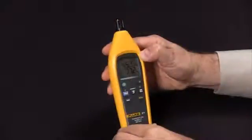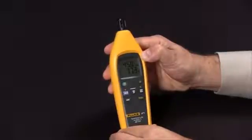And these are the key features of the Fluke 971 temperature and humidity meter.